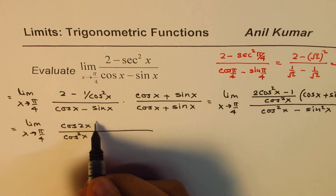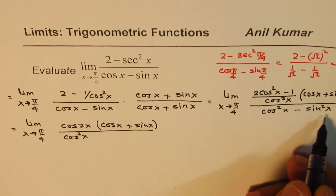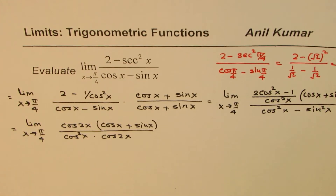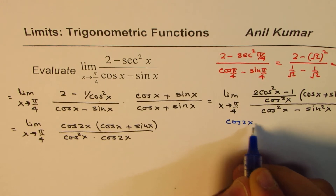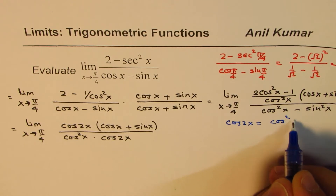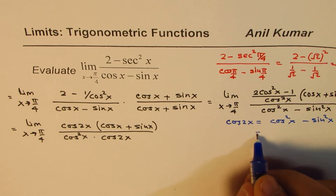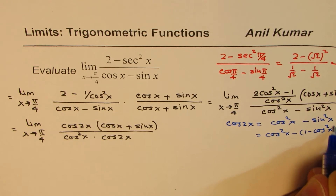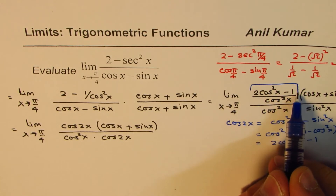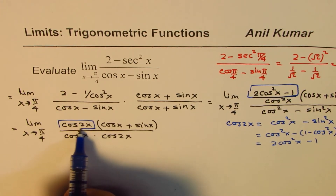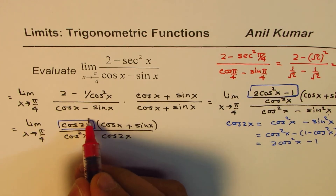The denominator cos squared x minus sin squared x is also cos 2x. Let me confirm the identity: cos 2x equals cos squared x minus sin squared x. If we write sin squared x as 1 minus cos squared x, we get 2 cos squared x minus 1. So both the numerator factor and the denominator are cos 2x, and we can cancel them.